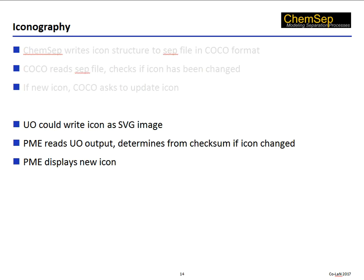It could perhaps be done a little bit differently to make it more generic and more versatile. The unit operation could write an icon as an SVG image, for example. The PME then reads the unit operation output and determines from a checksum if the icon has changed. If it has, the PME displays the new icon. However it is done, we would like to see process modeling environments display more accurate icons to properly reflect the actual process.